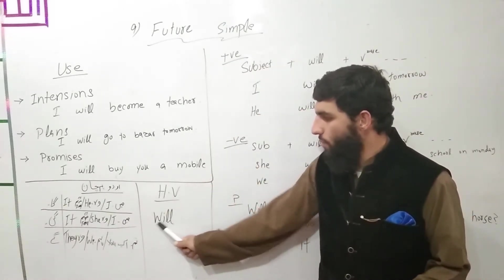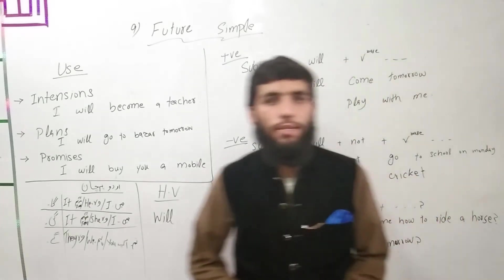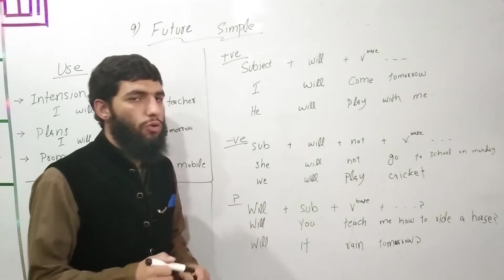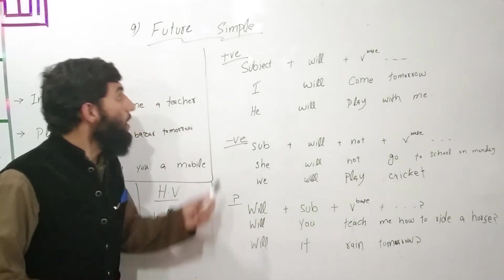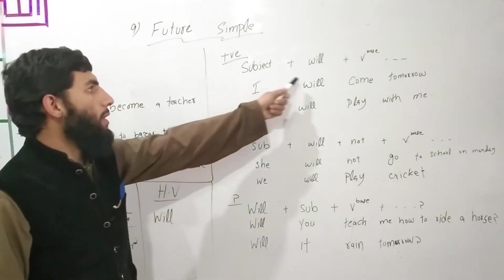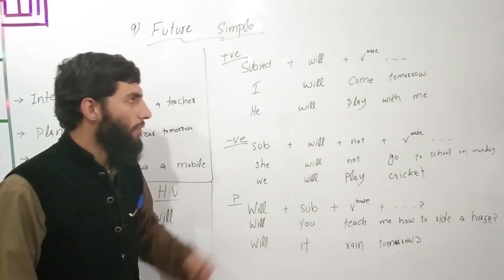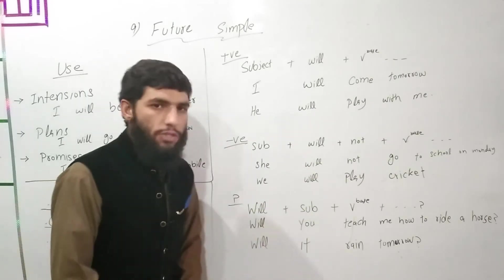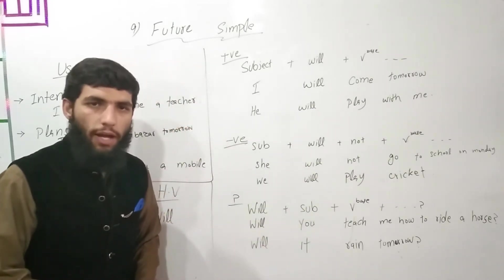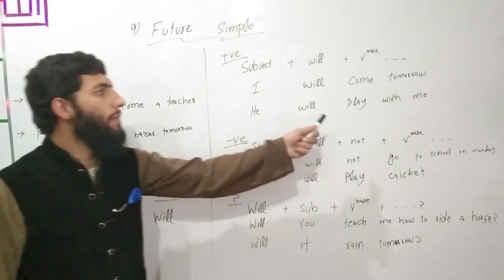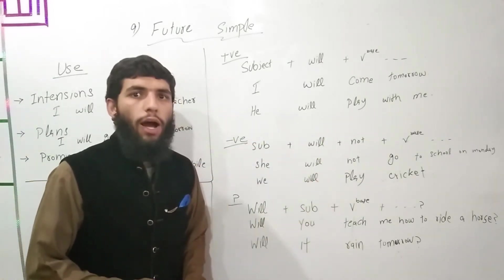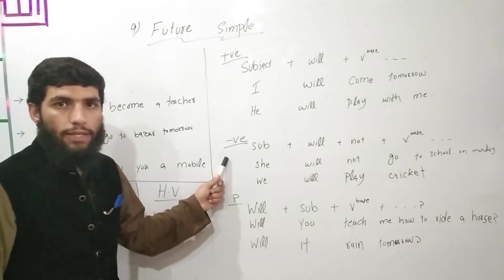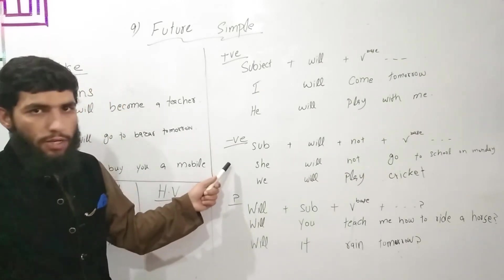The helping verb for future simple tense is 'will', and it is used for all pronouns — both singular and plural. The positive structure is: Subject + will + verb base form + rest of the sentence. For example: 'I will come tomorrow' or 'He will play with me.'